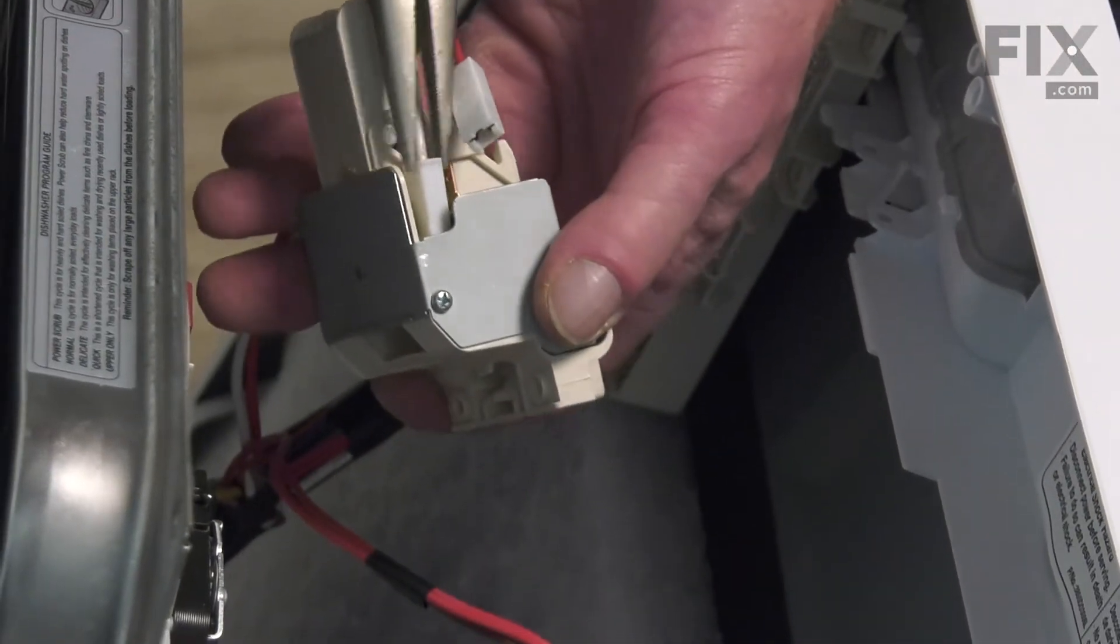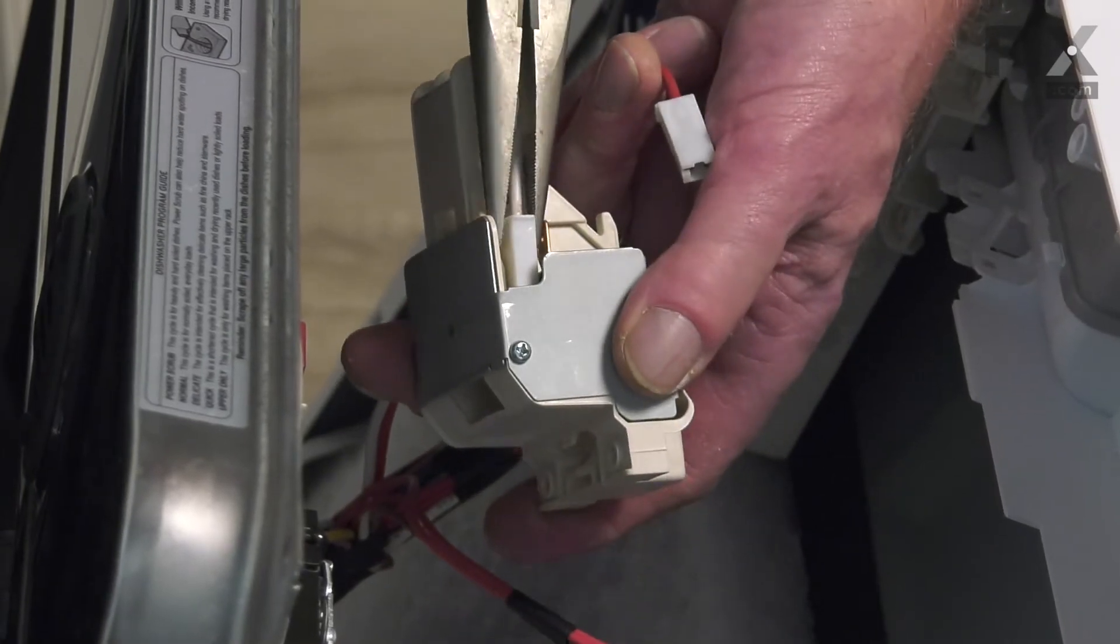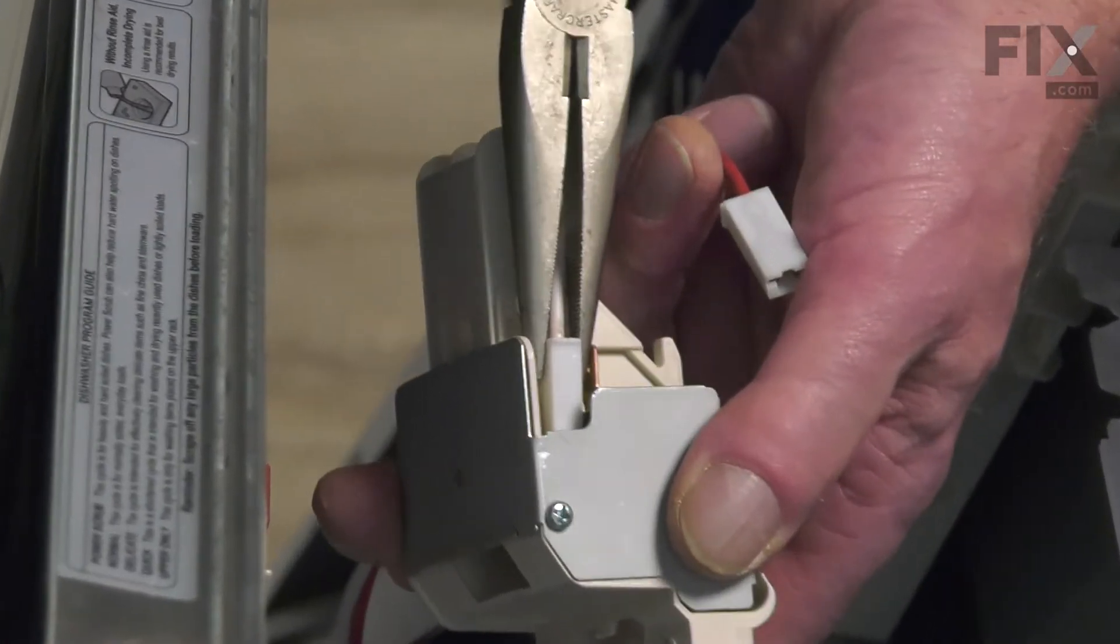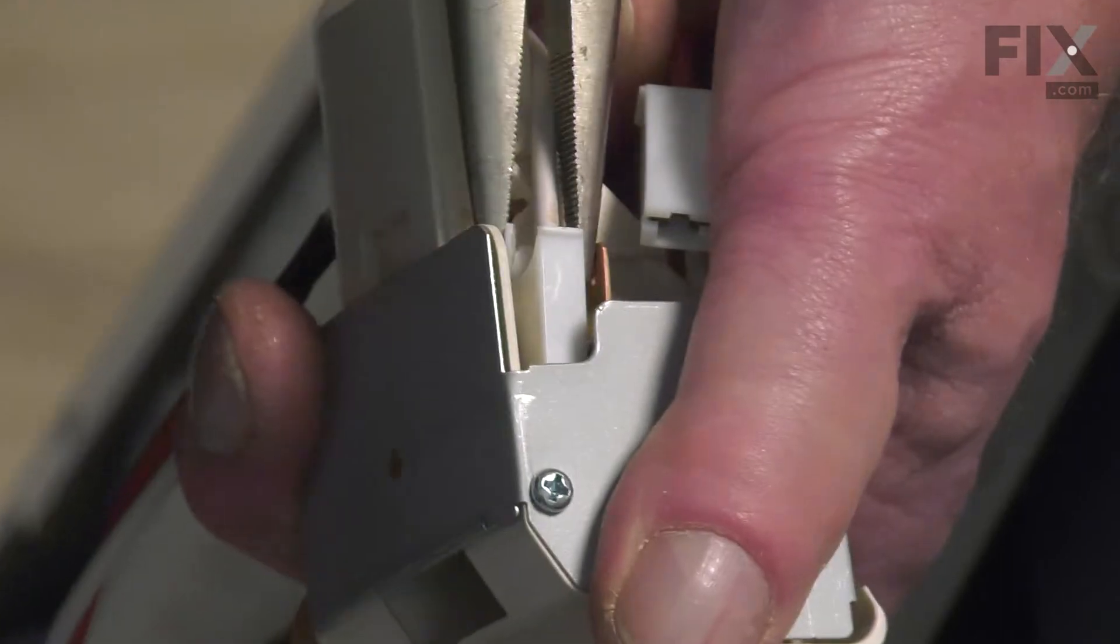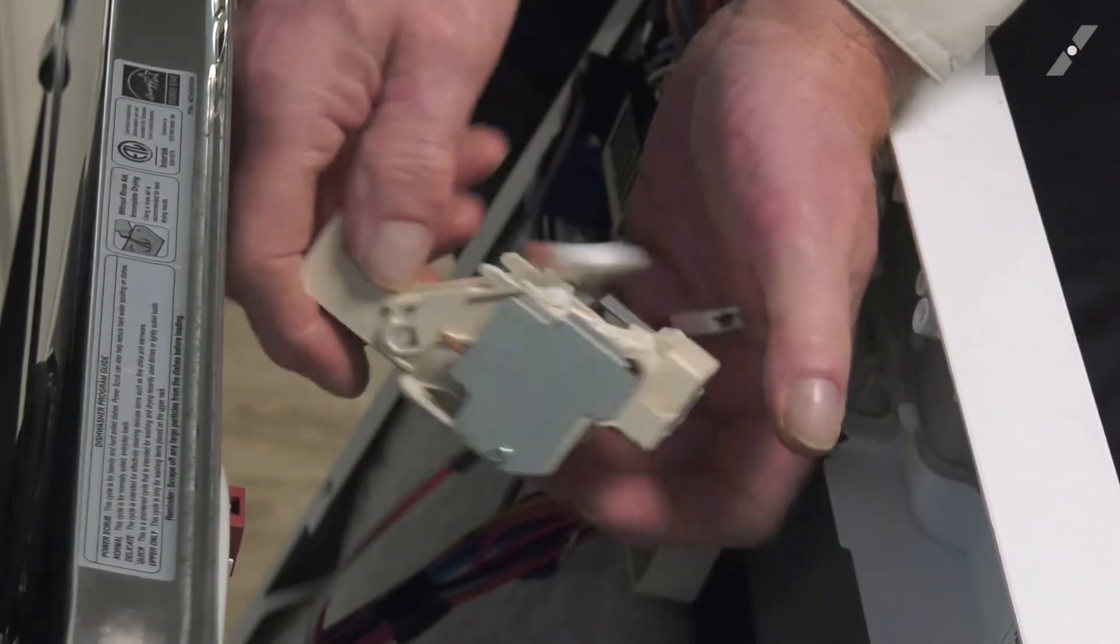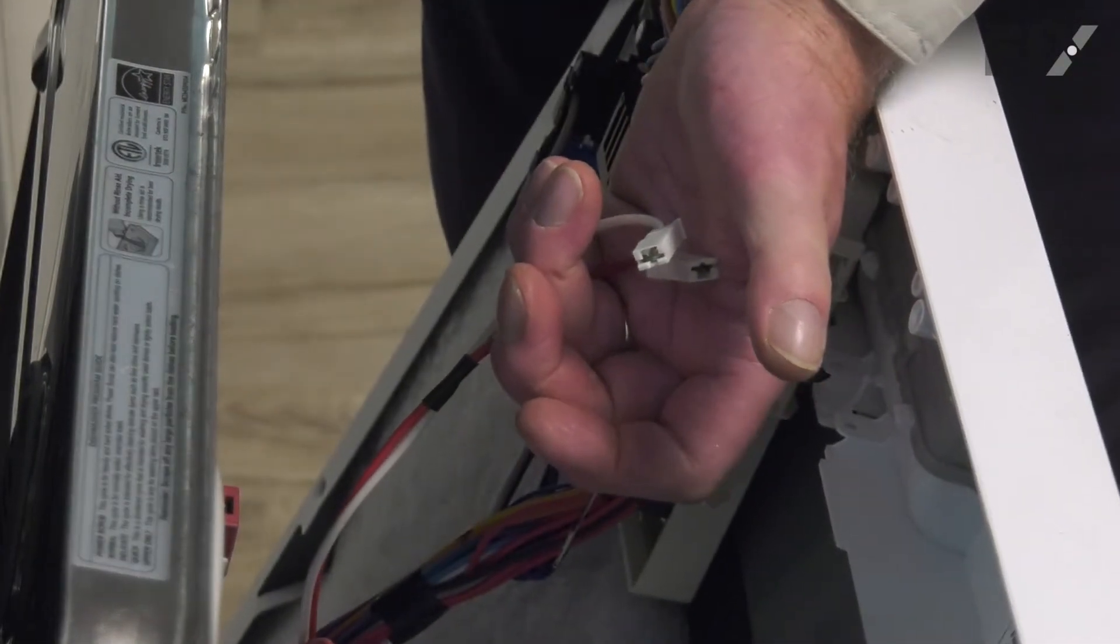For this single white one, you may need to use a pair of needle nose pliers. Be sure to grasp the connector and not the wire. You can then discard the old door latch assembly.